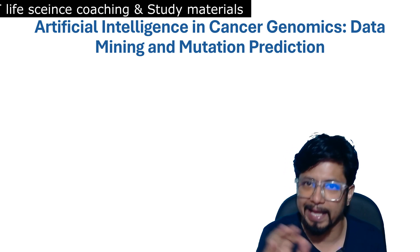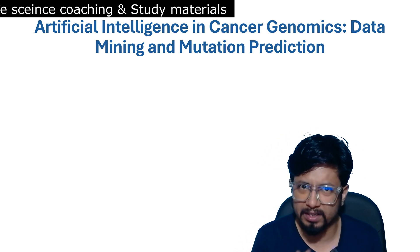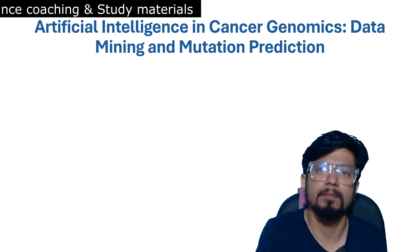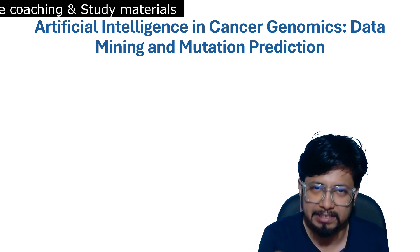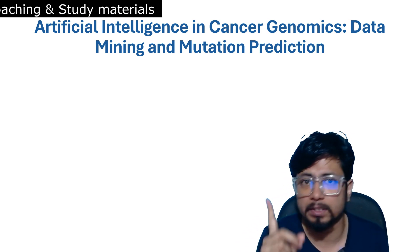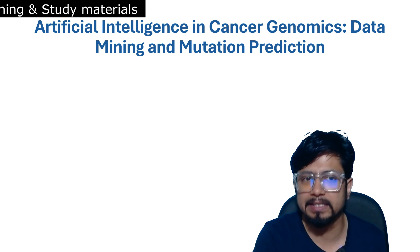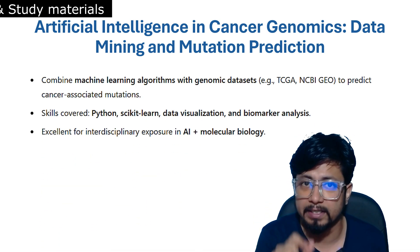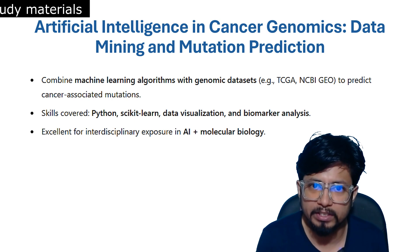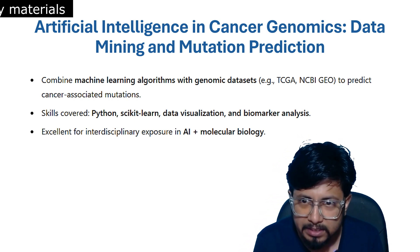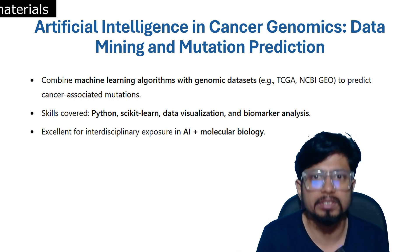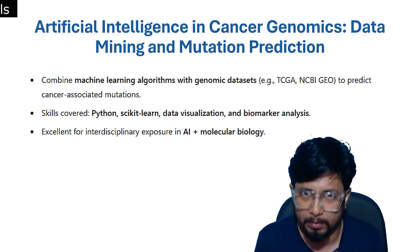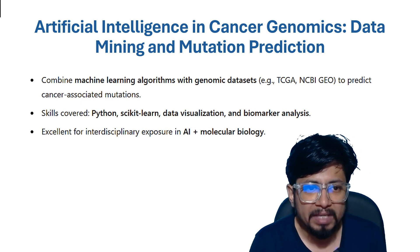The fourth topic is artificial intelligence in cancer genomics, specifically data mining and mutation prediction. AI is the buzzword in 2025 and 2026, and this kind of project can be completed within three to four months with high-impact output. You combine machine learning algorithms with genomic databases like TCGA and NCBI GEO to predict cancer-associated mutations. Skills covered include Python, data visualization, and biomarker analysis.